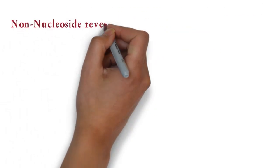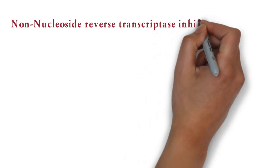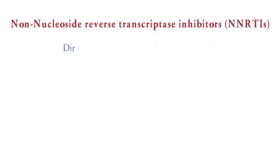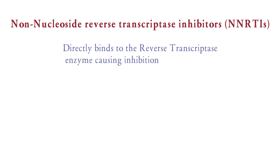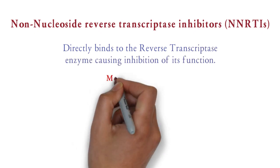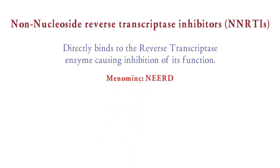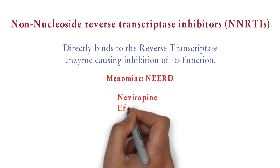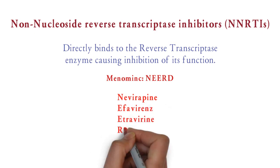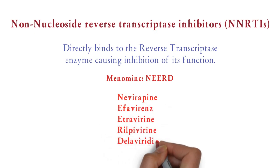Next are non-nucleoside reverse transcriptase inhibitors, i.e. NNRTIs. Mechanism: these drugs directly bind to the reverse transcriptase enzyme, causing inhibition of its function. The mnemonic for the names of these drugs is NERD — N-E-E-R-D. Why NERD? Because they are not with NRTIs; they are N-NRTIs. The drugs are nevirapine, efavirenz, etravirine, rilpivirine, and delavirdine.